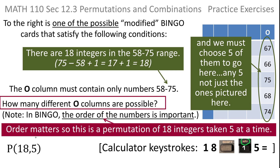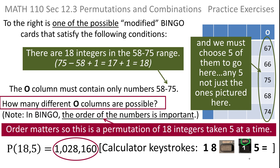The calculator keystrokes: enter 18, shift one for permutation, enter five, then equals to calculate. You'll come up with 1,028,160. There are a lot of permutations possible just for the O column.